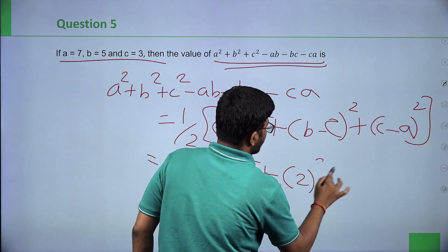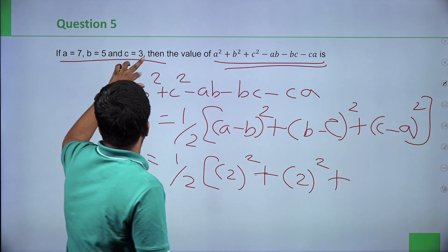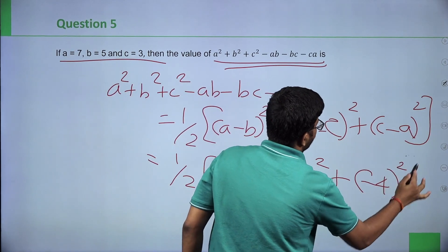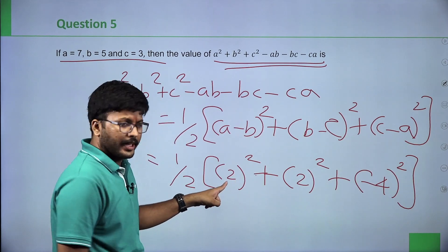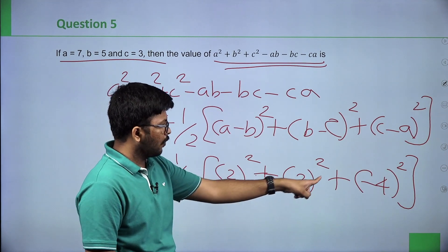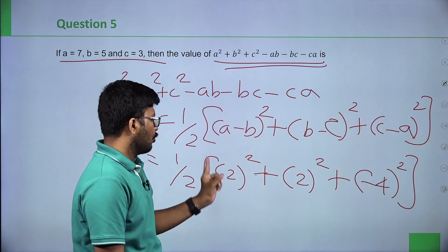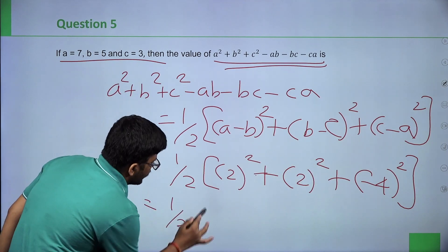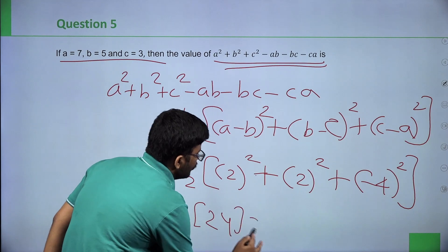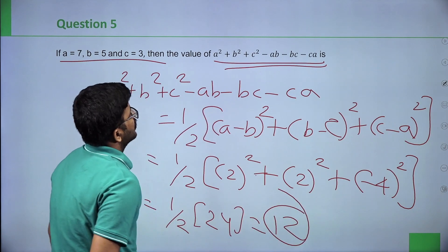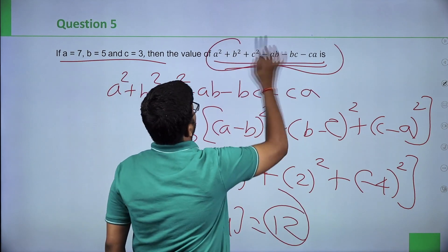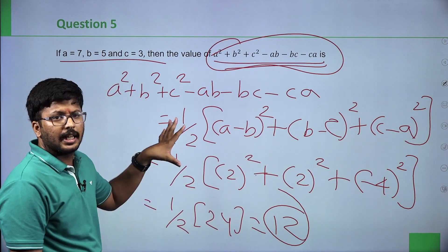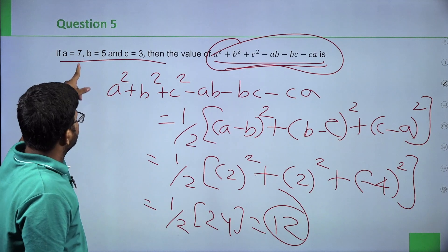c minus a = 3 minus 7 = minus 4, so minus 4 squared = 16. Therefore: one half into (4 plus 4 plus 16) = one half into 24 = 12. So a square plus b square plus c square minus ab minus bc minus ca equals 12.